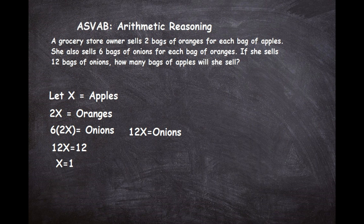X equals the number of apples, so if we sell 12 bags of onions, we will sell one bag of apples. We can check this: if we sold one bag of apples, we would sell two bags of oranges. Then, for two bags of oranges, we sell six bags of onions for every bag of oranges — so two times six equals 12, which matches the 12 bags of onions we started with. That's how you check your work.